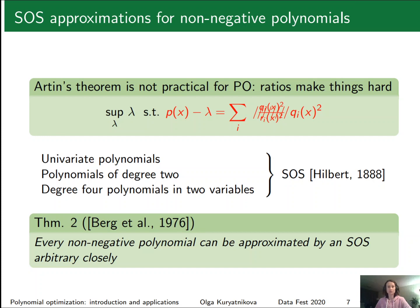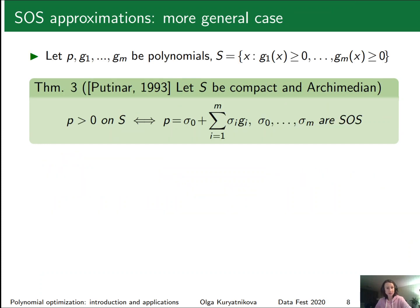That covers the simplest case where our set equals R^n. But we started with a set S defined by polynomial inequalities. With this kind of set, we generalize the SOS result: instead of just one sum of squares sigma_0, we use an additional term — a summation of sums of squares sigma_i multiplied by g_i. Therefore, as long as the g_i's are non-negative, this summation is non-negative and the whole expression is non-negative. Hence a polynomial of this form is always non-negative on S.